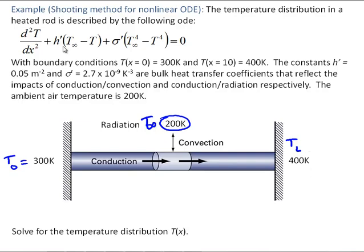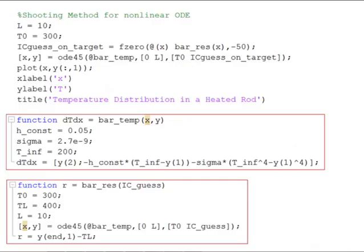The two coefficients, h-prime and sigma-prime, are bulk heat transfer coefficients combining the effects of conduction and convection in h-prime, and conduction and radiation in sigma-prime. We're going to use this differential equation to solve for the temperature distribution T of x.